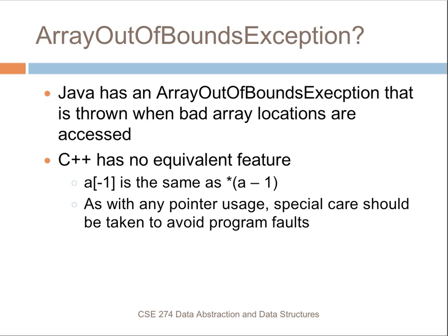In Java we have the array out-of-bounds exception thrown whenever a bad array location is accessed. Unfortunately C++ does not have this equivalent feature. I can do things like A[-1] using this notation, and if that memory location happens to be defined it will actually execute — which is obviously not something you want. You have to be careful to know the size of your array and access locations properly. That concludes this episode; next we'll be talking about C++ parameters and parameter passing.